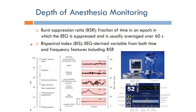A much more accurate measure is the bispectral index (BIS), currently the leading technique for depth of anesthesia monitoring. It is an EEG-derived variable incorporating both time and frequency domain features, including the burst suppression ratio. The BIS ranges from 0 to 100: a value of 90 to 100 indicates an awake patient with intact memory; 65 to 85 corresponds to sedation; and 45 to 65 represents the target range for general anesthesia.